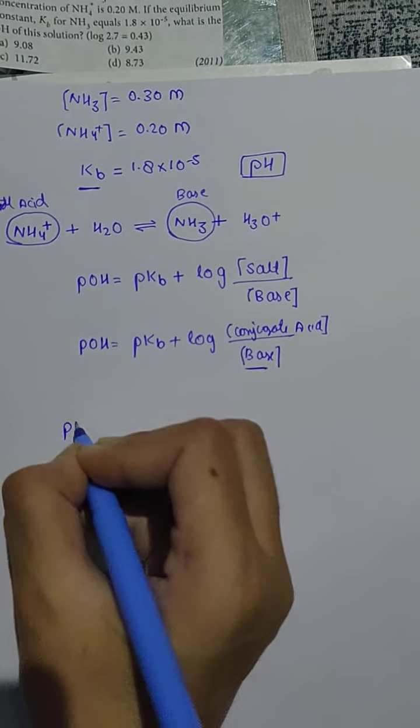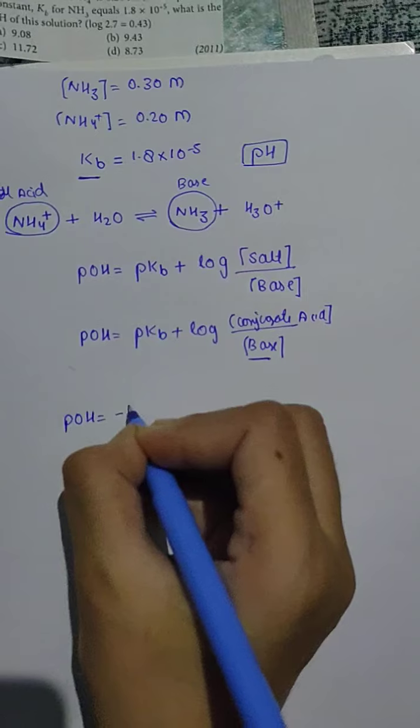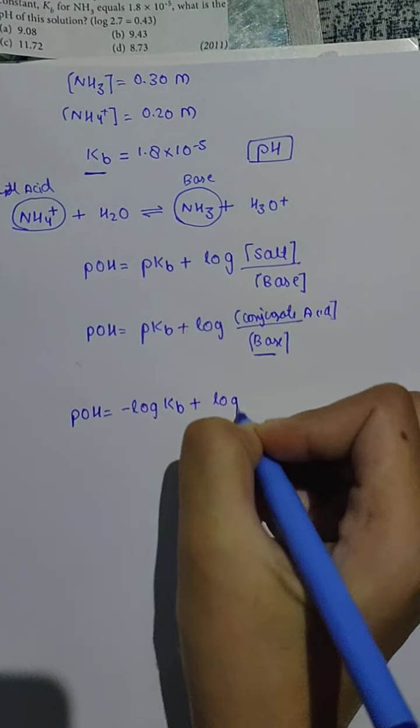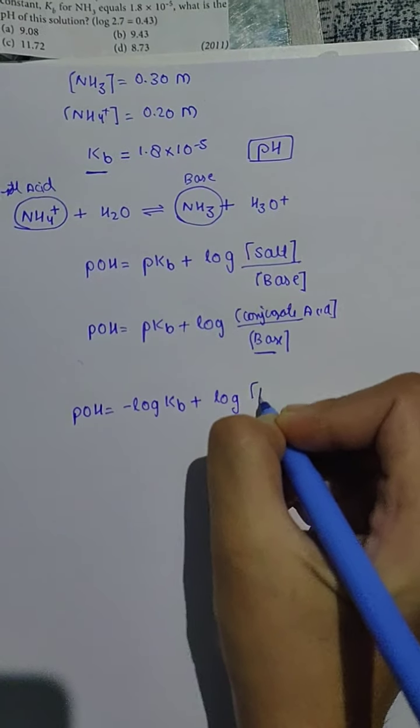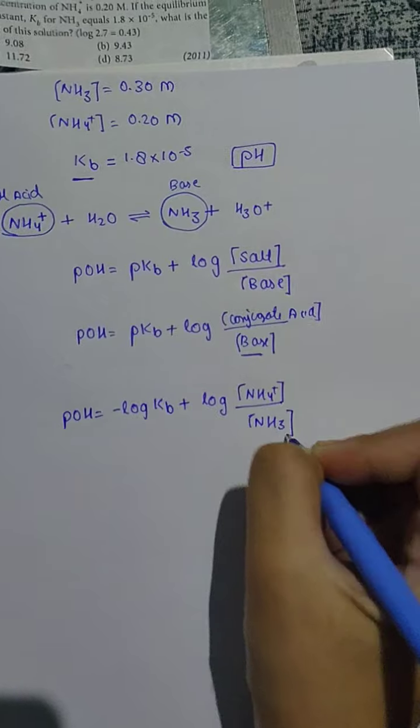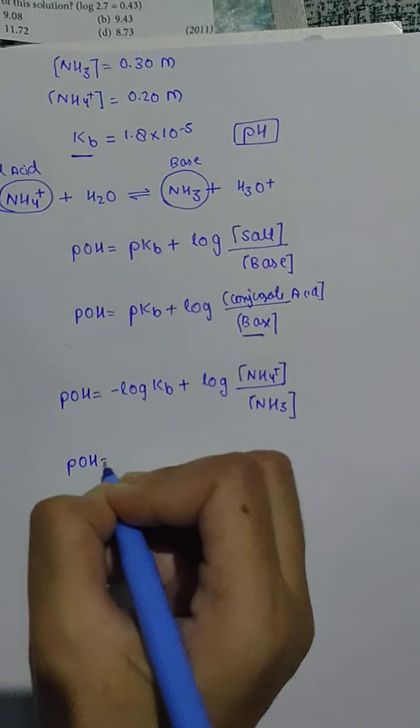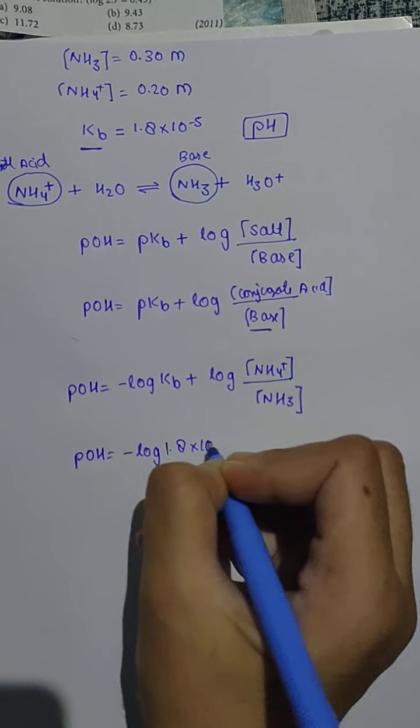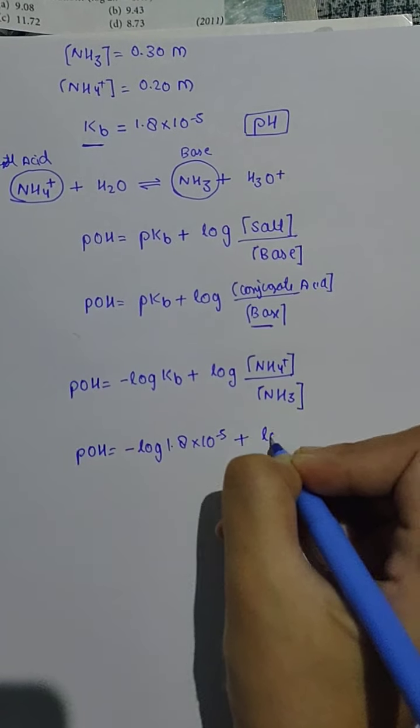So we start here: pOH equals pKb, which is minus log of Kb, plus log of the conjugate acid concentration, which is NH4+, divided by the base concentration, NH3.